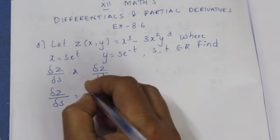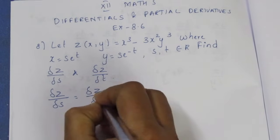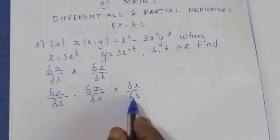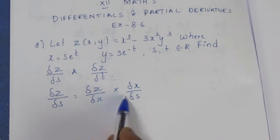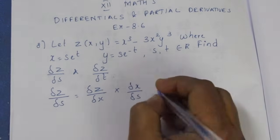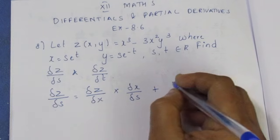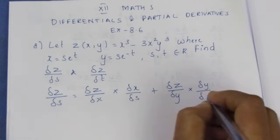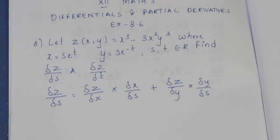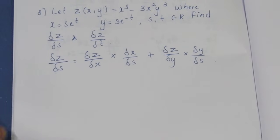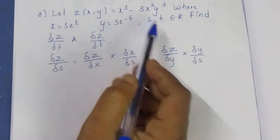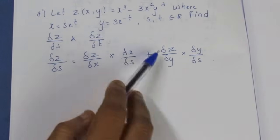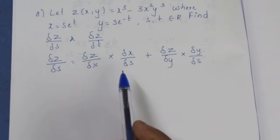For ∂z/∂s, we apply the chain rule: ∂z/∂s = (∂z/∂x)(∂x/∂s) + (∂z/∂y)(∂y/∂s). We differentiate z with respect to x, then x with respect to s, and similarly with y. Then substitute the answers.